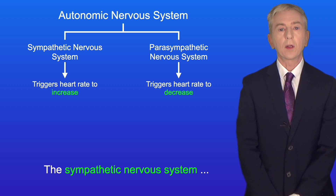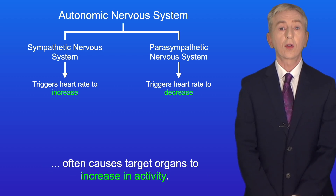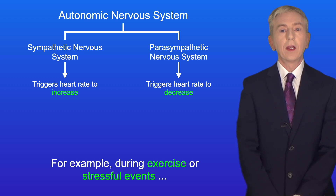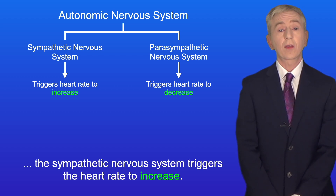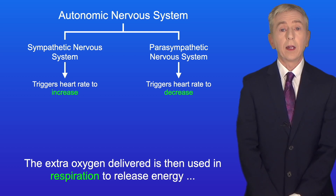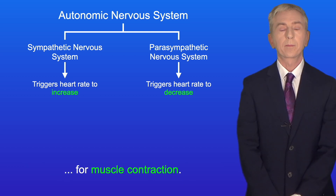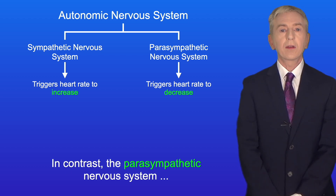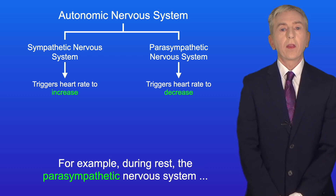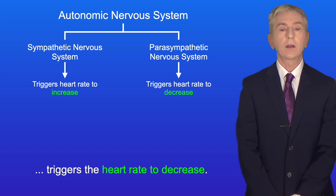The sympathetic nervous system often causes target organs to increase in activity. For example, during exercise or stressful events, the sympathetic nervous system triggers the heart rate to increase, which increases the supply of blood to muscles. The extra oxygen delivered is then used in respiration to release energy for muscle contraction. In contrast, the parasympathetic nervous system causes target organs to become less active — for example, during rest, it triggers the heart rate to decrease.